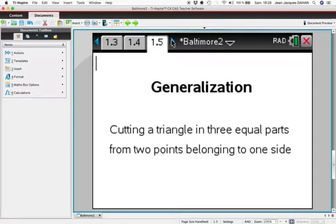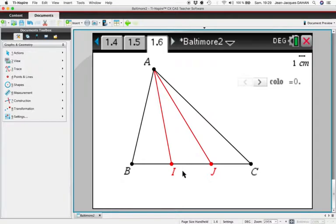We can generalize this result in order to cut a triangle in three equal parts from two points belonging to one side. How to do that? We cut this side in three equal parts: BI equal IJ equal JC.